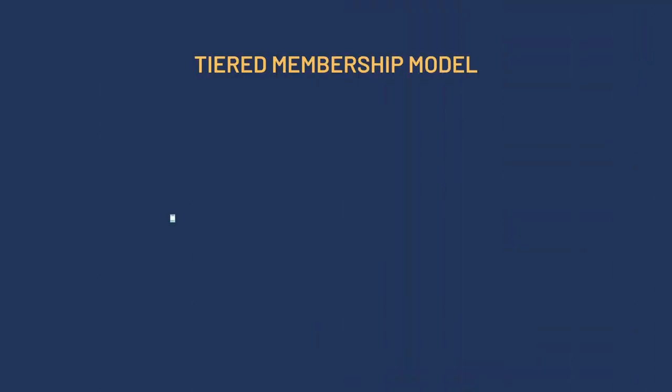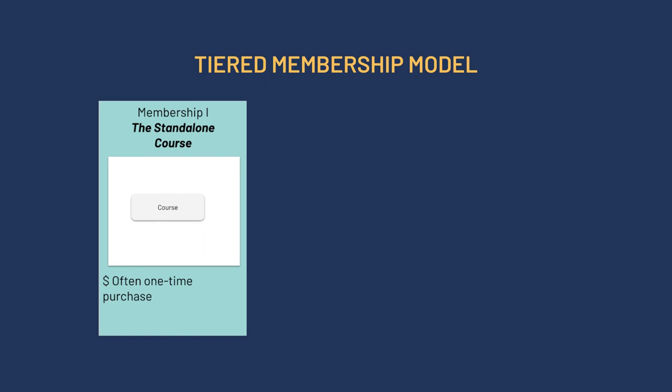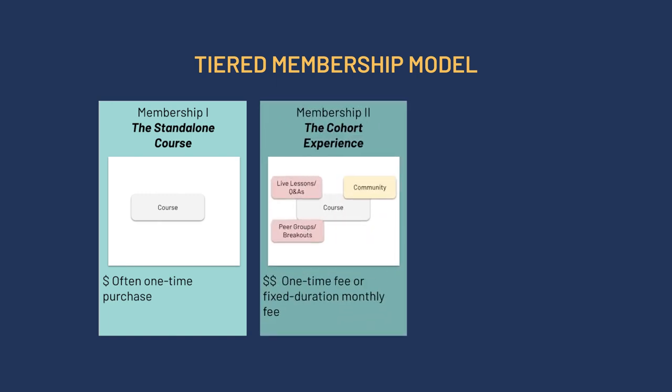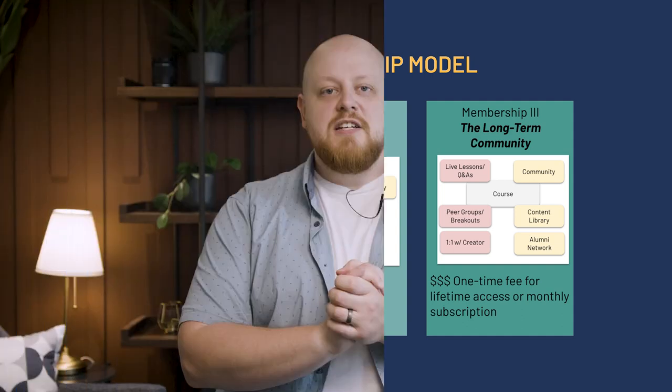For example, if you have a membership model, you could offer a bronze tier with access to the course content only, a silver tier with access to the community included, and a gold tier with direct access to the instructor included, along with all the other things.